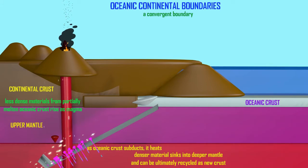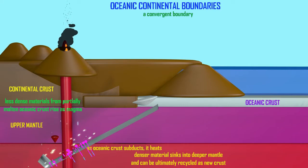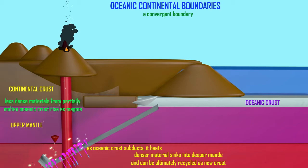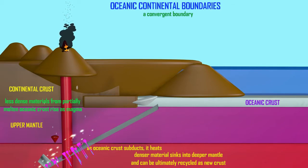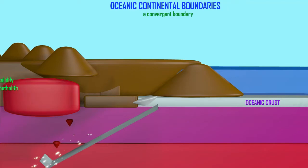this igneous material can fill vertical faults and form dikes. It can form sills if it fills in a horizontal fissure. It can be released from the mountain in a volcanic eruption, and there can be a whole chain of these mountains along the line of the subduction forming a volcanic arc.